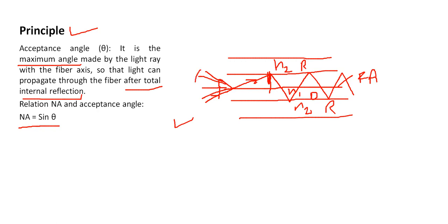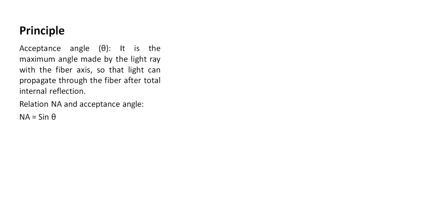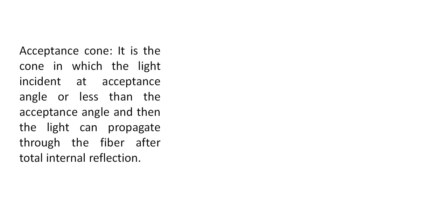If we join these maximum angles together, this forms a cone. Light incident within this cone will be totally internally reflected. This is known as the acceptance cone — it is the cone in which light incident at the acceptance angle or less than the acceptance angle can propagate through the fiber after total internal reflection.